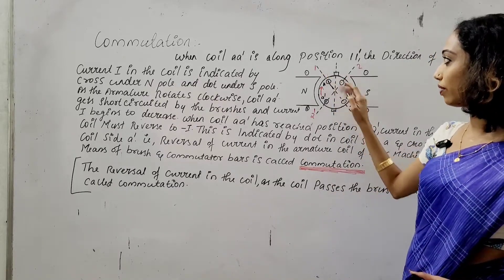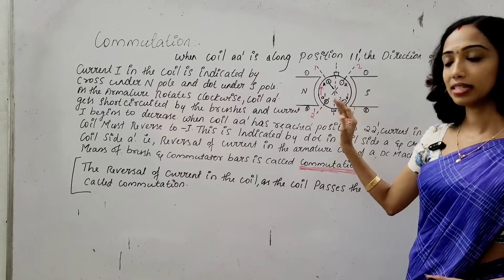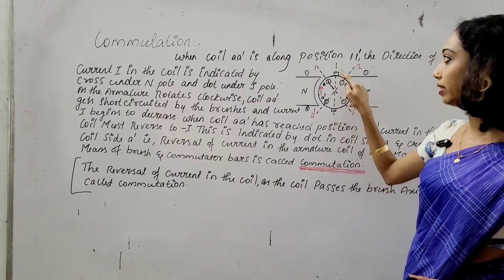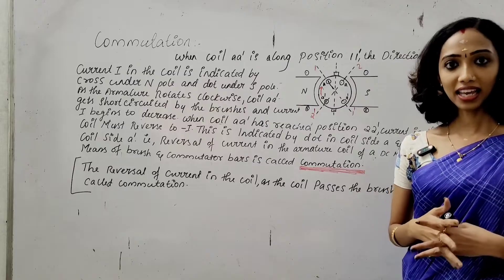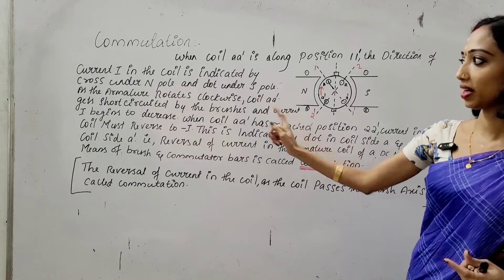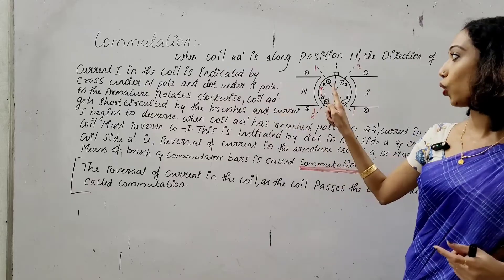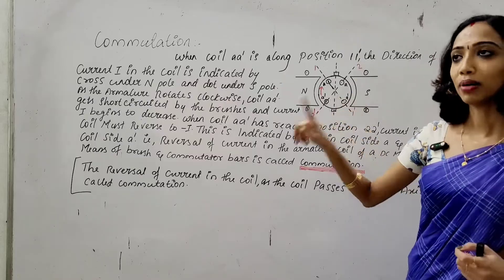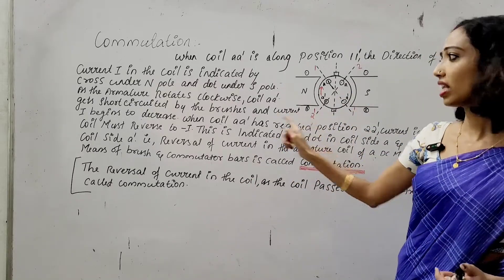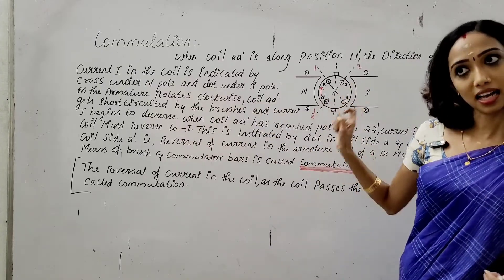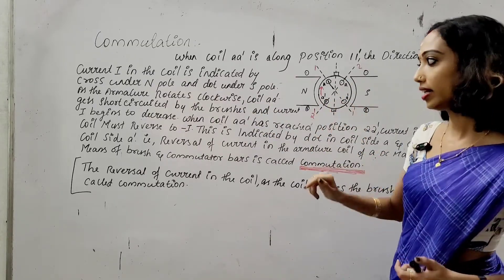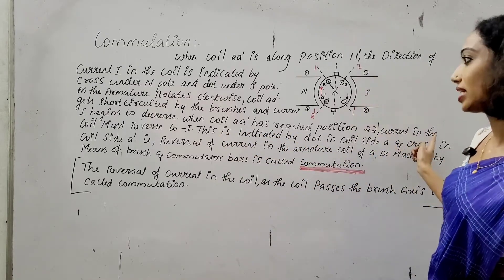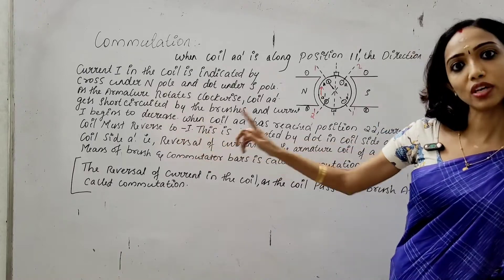As the armature rotates, AA' is short-circuited with the brush. As the armature rotates clockwise, coil AA' gets short-circuited by the brushes and current begins to decrease. When the coil AA' has reached position 2-2', current in the coil must reverse to minus I.